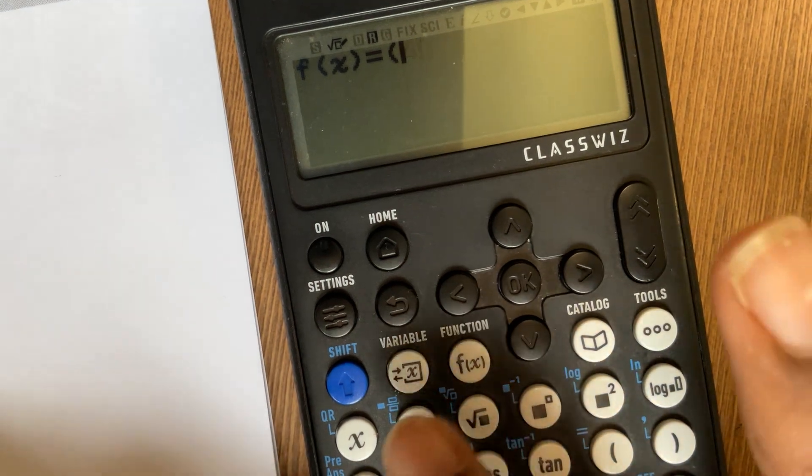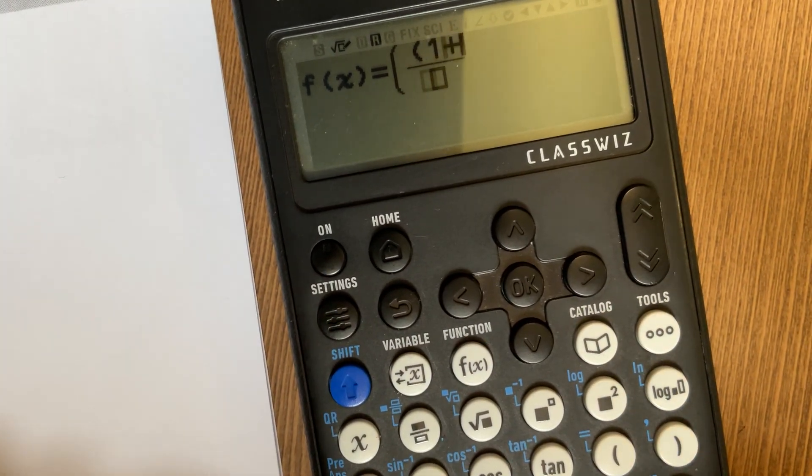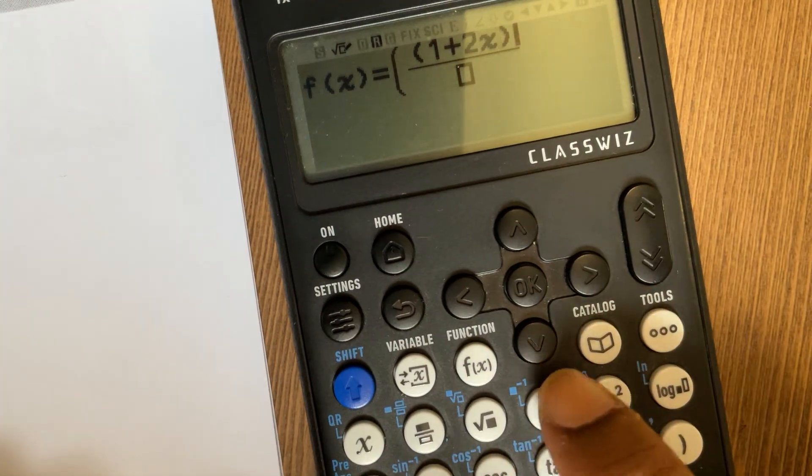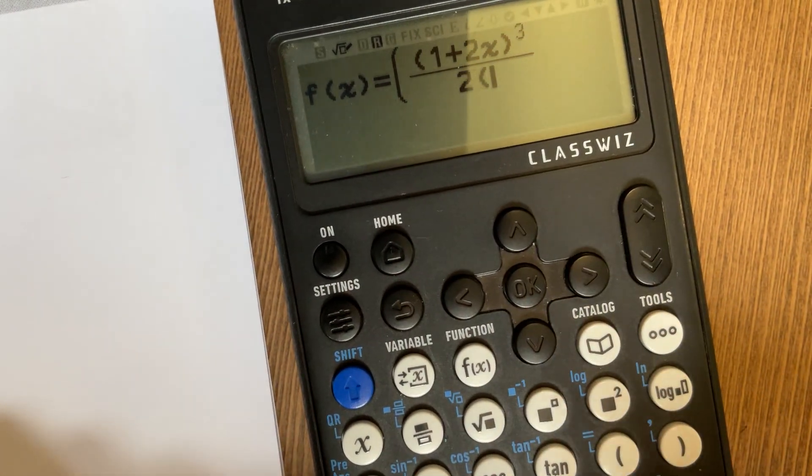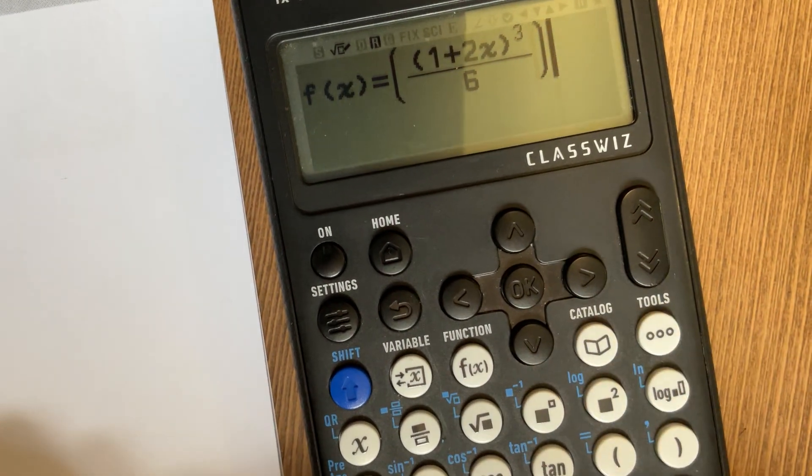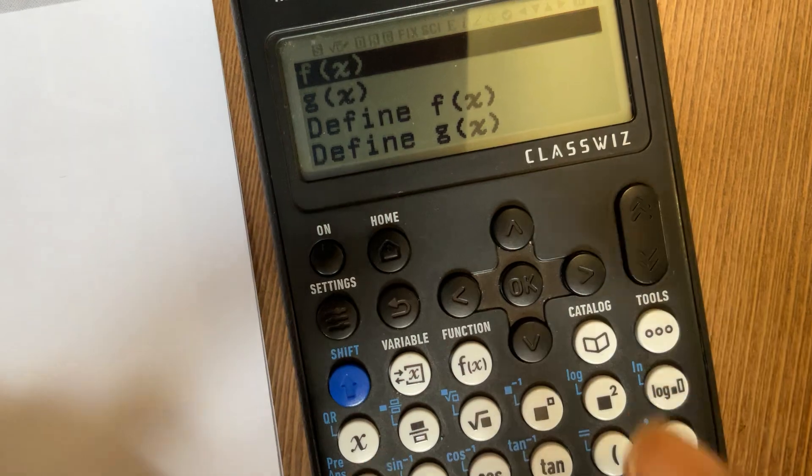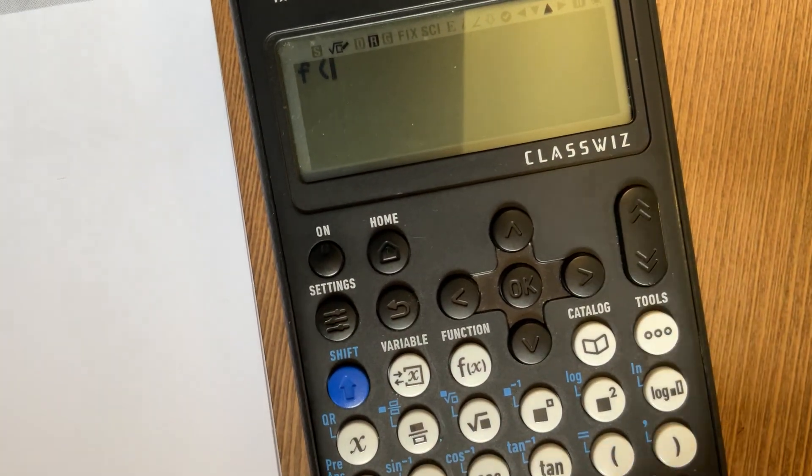So let's put in our function which was 1 plus 2x whole cubed over 3 or 6, okay, because it was 3 times 2, and now we go click on fx and we can just substitute in what we want. Let's say we want 2.